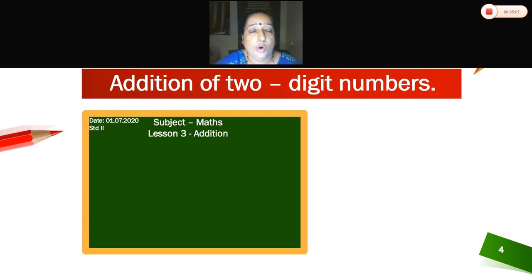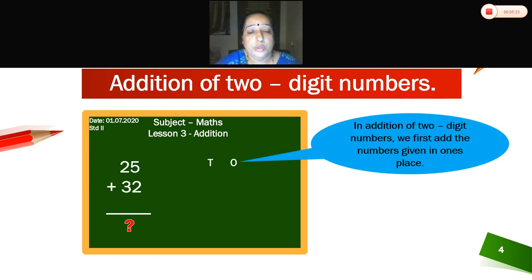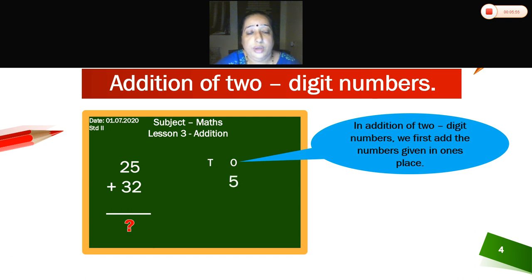Now, addition of 2-digit numbers. Can you see the number on the board, children? 25 plus 32. Now in place value we have tens place and ones place in a two-digit number. So in addition of two-digit numbers, we first add the numbers given in the ones place. What is your 5 and 2?